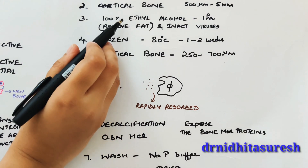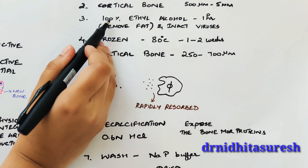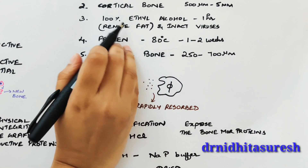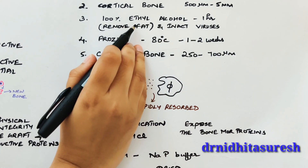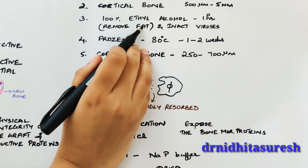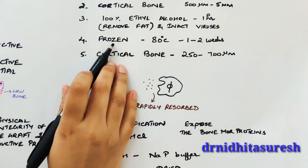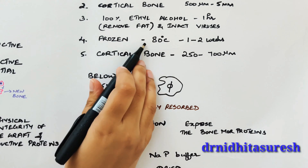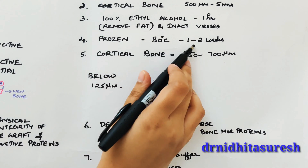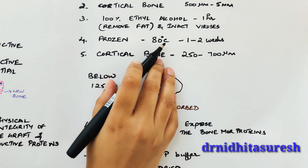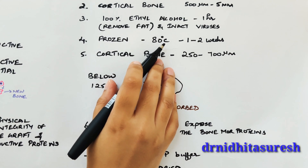The graft is then immersed in 100% ethyl alcohol for one hour to remove fat and inactivate any viruses present. The fourth step is freeze-drying: the graft is frozen at minus 80 degrees Celsius for one to two weeks to interrupt and stop the degrading process of the bone.